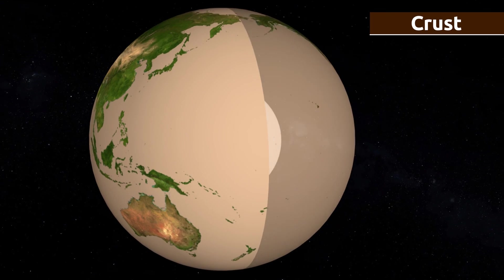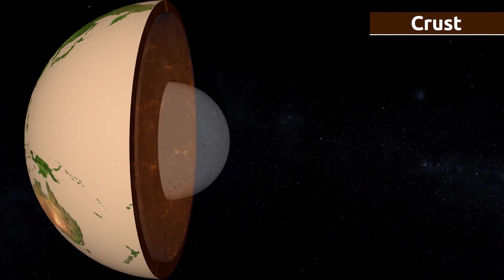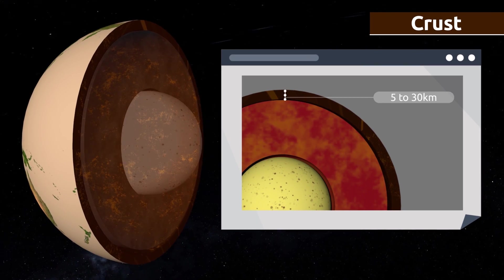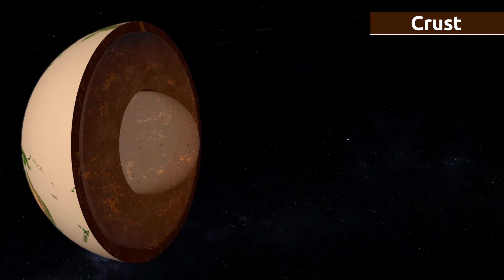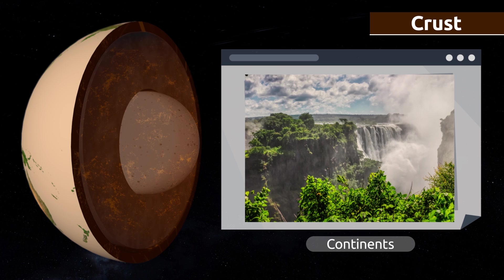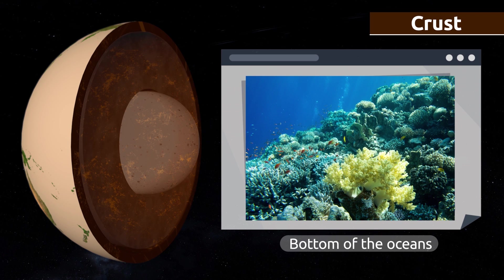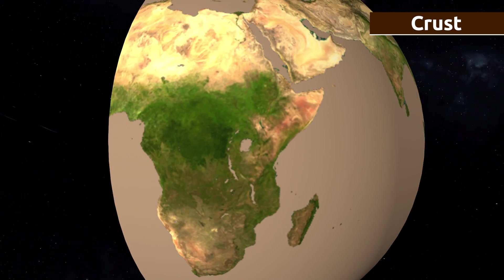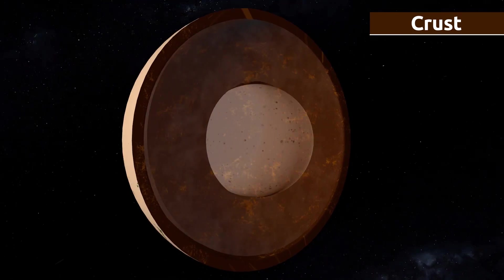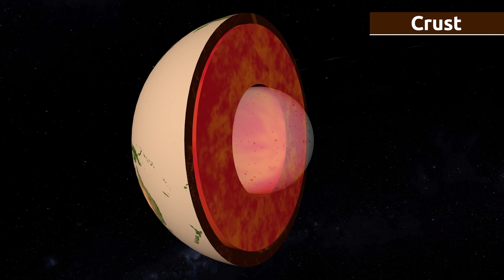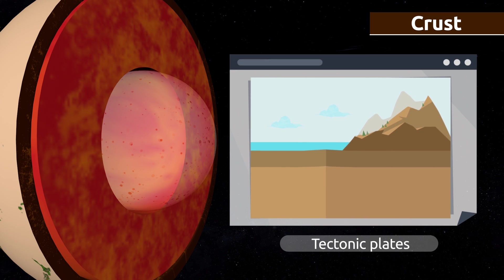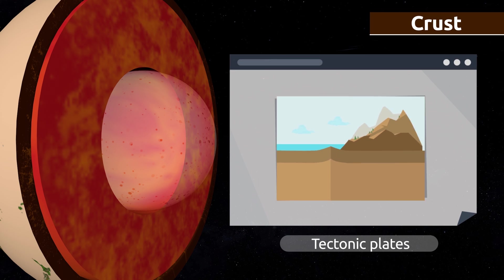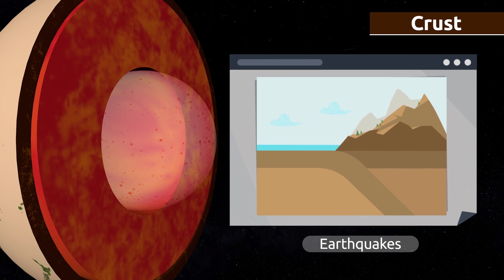The crust is the thinnest, outermost layer of the geosphere. Its thickness varies from 5 to 30 kilometers depending on where you are on the Earth. The crust is made up of continents and the bottoms of the oceans. The geosphere is broken up into several tectonic plates, which make up the crust and also the mantle and are found in a layer called the lithosphere. Tectonic plates are constantly moving and molding the crust — their movements cause earthquakes.